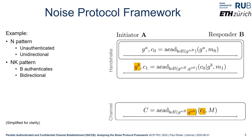The NK pattern extends the N pattern by adding a second handshake message from responder B back to initiator A, authenticating B's payload and establishing a bidirectional channel. In this second message, B generates and sends a fresh Diffie-Hellman share g^b, so g^ab is now part of the key derivation for encrypting payload in both directions. The last handshake ciphertext always serves as associated data for all future channel communication between A and B.